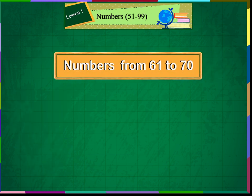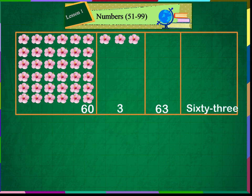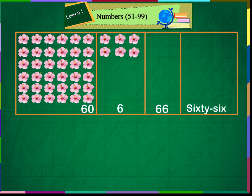Numbers from 61 to 70. 60 and 1 makes 61. 60 and 2 makes 62. 60 and 3 makes 63. 60 and 4 makes 64. 60 and 5 makes 65. 60 and 6 makes 66.